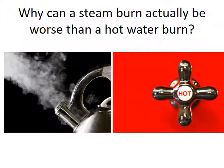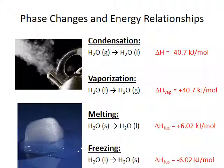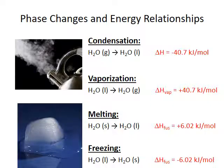Even if the steam and the boiling water start out at the same temperature — 100 degrees Celsius — the steam burn will be more severe. This is because steam must change phase as it cools to body temperature, and the process of condensation is exothermic. Gas molecules must lose a lot of heat before they can go back into the liquid phase: 40.7 kilojoules for every one mole of water molecules that condenses.